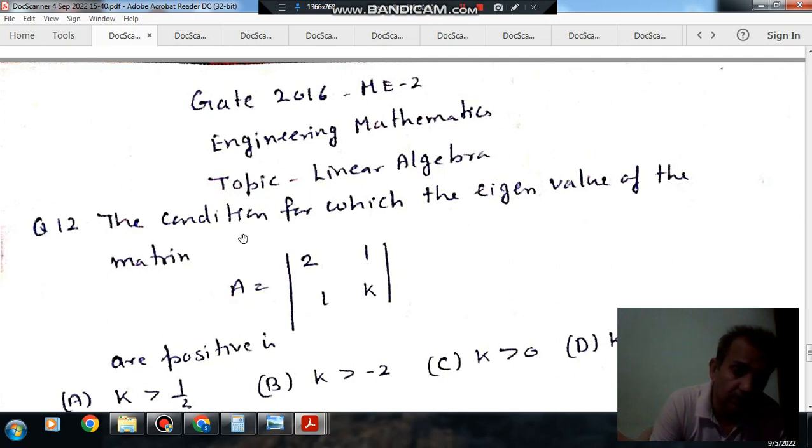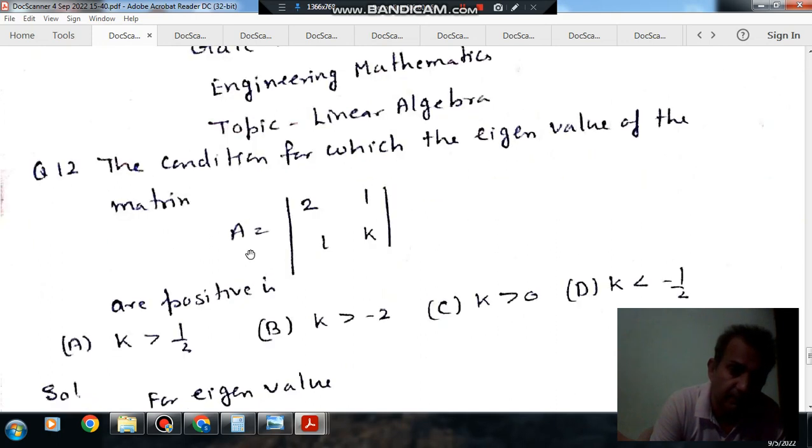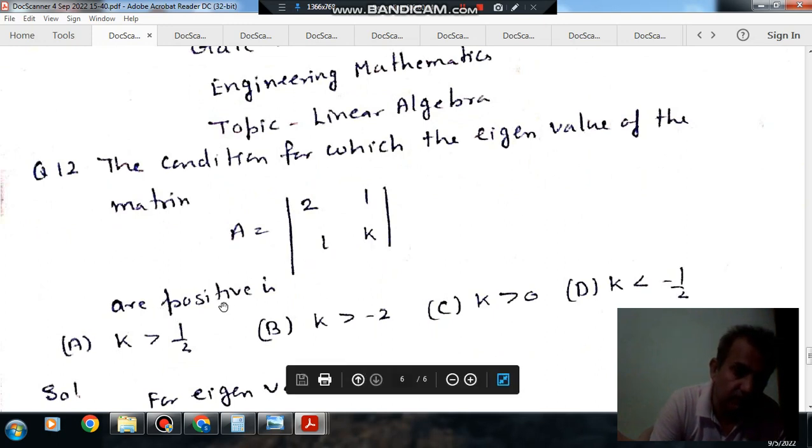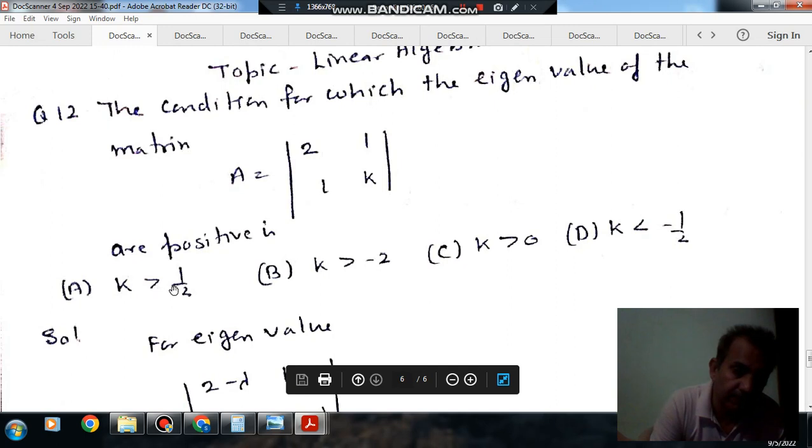Question number 12 from Gate 2016B: The condition for which the eigenvalues of matrix A equal to [2, 1; 1, K] are positive is: Option A, K greater than 1/2. Option B, K greater than -1/2.